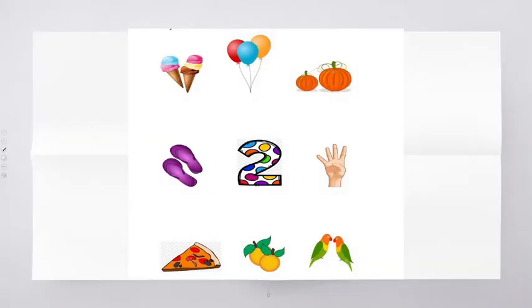So this is the activity. We are going to match the colorful two with the two objects. If the objects are not in a quantity of two, we are not going to match two with them. How many balloons are there? One, two and three — no, this is not in two, so we are not going to connect it. How many pumpkins are there? Two — one and two. So we are going to connect the pumpkins with number two.